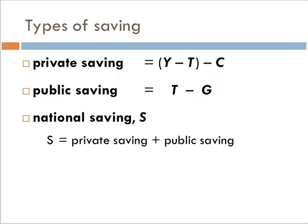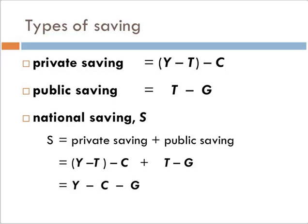If we put private and public savings together, we have national savings — total savings within the economy. Adding those together gives us Y minus T minus C plus T minus G, or Y minus C minus G, because the two tax terms offset one another.